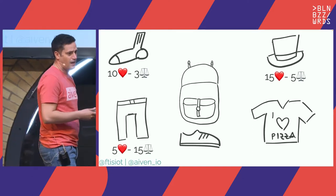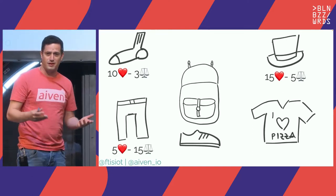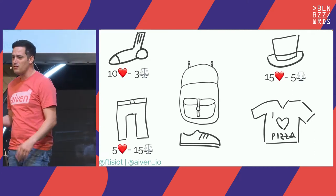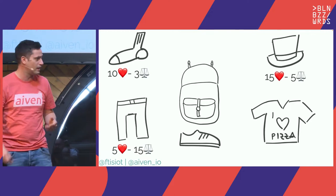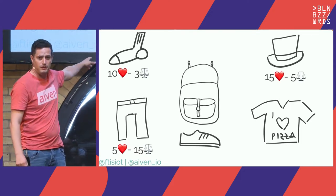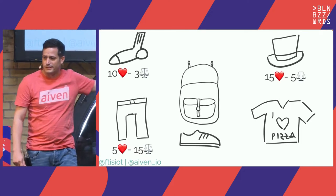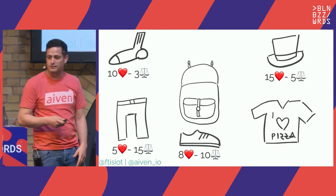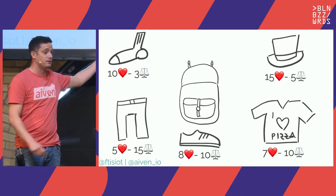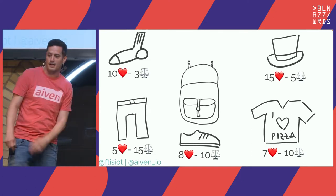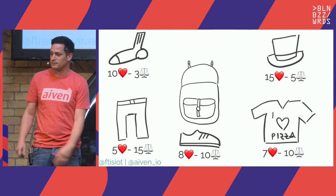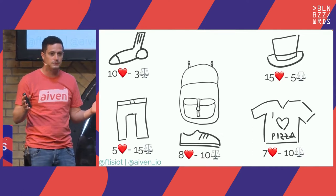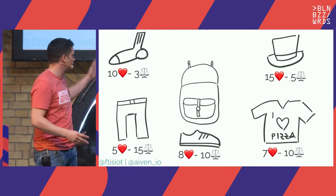Let's move to the trousers. I don't mind going out with trousers even if they have an extra scratch here and there. The trousers have an extreme weight of 15. Shoes are a mixed bag: value of 8, weight of 10. And the same goes for one of my favorite t-shirts, which says that I love pizza — value of 7, weight of 10.